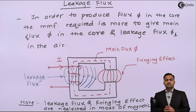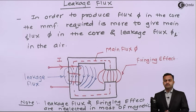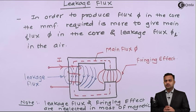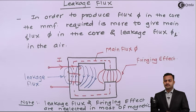So here we have seen the concept of fringing effect, which results due to a difference in magnetic flux density, and the concept of leakage flux, which occurs because some flux lines pass through air and complete their path. Both these effects are neglected in most magnetic circuit analysis. Thank you.